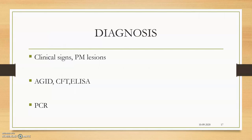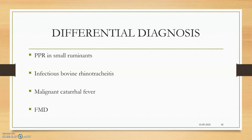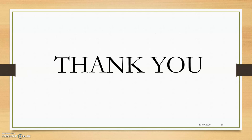Diagnosis begins with tentative diagnosis based on clinical signs, post-mortem lesions, and history. Laboratory confirmatory tests include AGID, CFT, ELISA, PCR, and RT-PCR. Differential diagnoses include PPR, infectious bovine rhinotracheitis (IBR), foot-and-mouth disease (FMD), and malignant catarrhal fever.